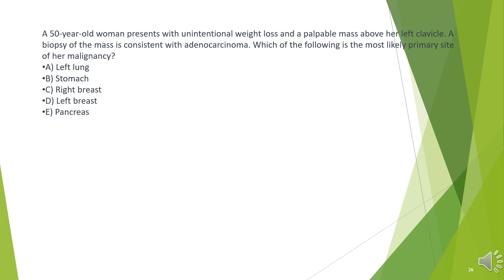A 50-year-old woman presents with unintentional weight loss and a palpable mass above her left clavicle. A biopsy of the mass is consistent with adenocarcinoma. Which of the following is the most likely primary site of her malignancy? A. Left lung. B. Stomach. C. Right breast. D. Left breast. E. Pancreas.